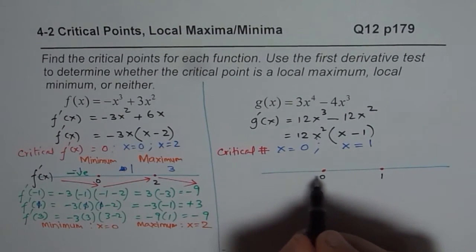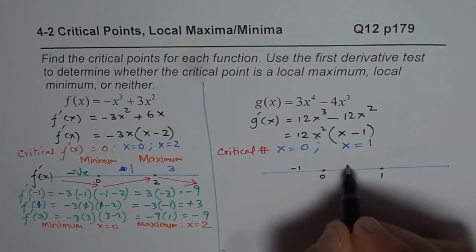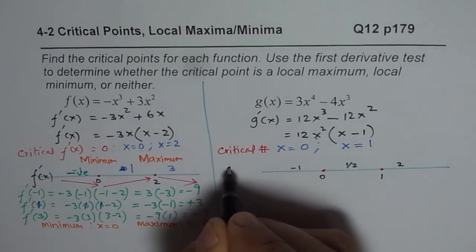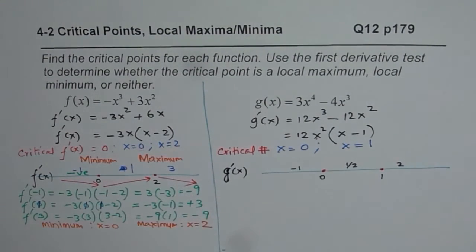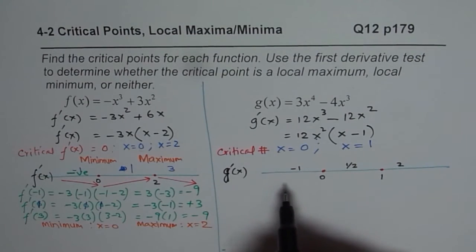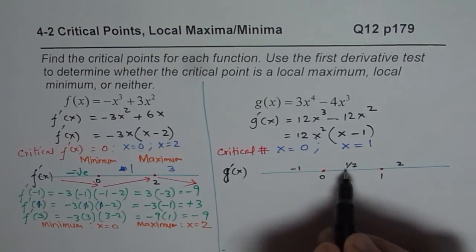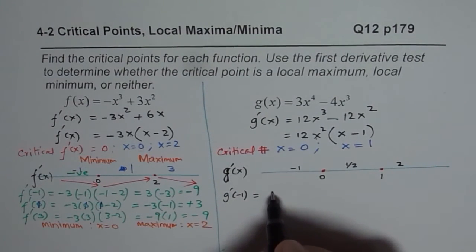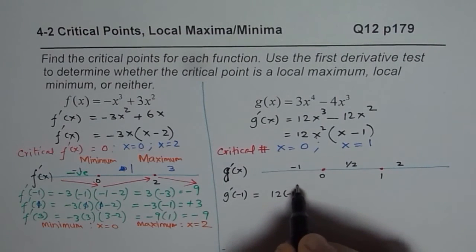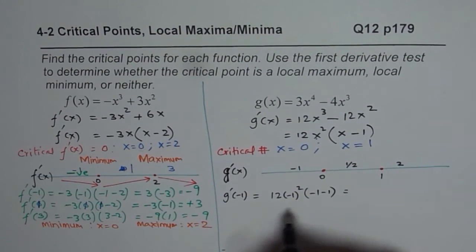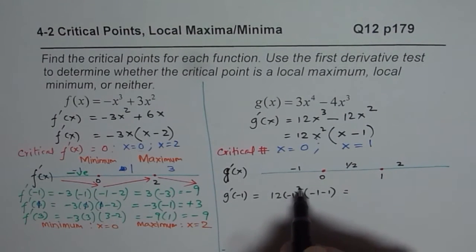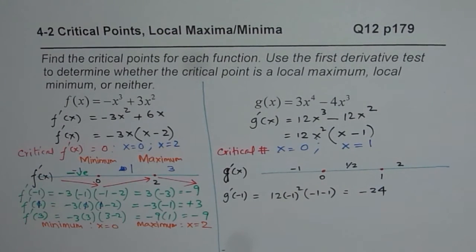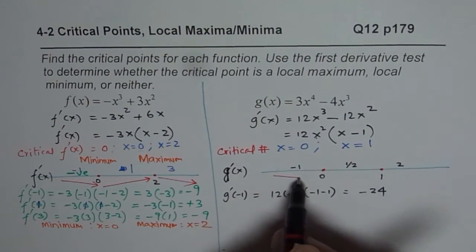We take test points: minus 1 for the interval less than 0, one-half for the interval between 0 and 1, and 2 for beyond 1. We are testing g prime of x. Substituting minus 1: we get 12 times (minus 1) squared times (minus 1 minus 1). That is 12 times 1 times minus 2, which is negative 24. The derivative is negative.